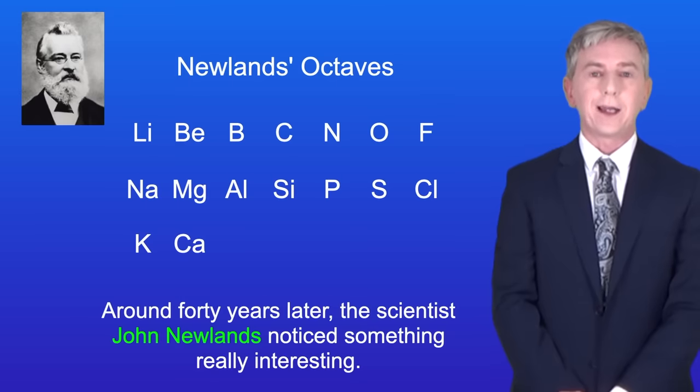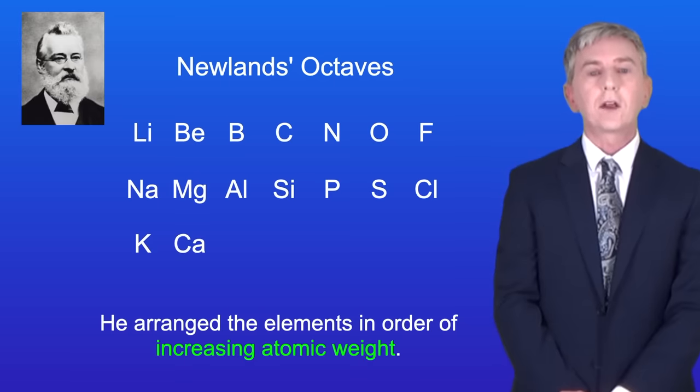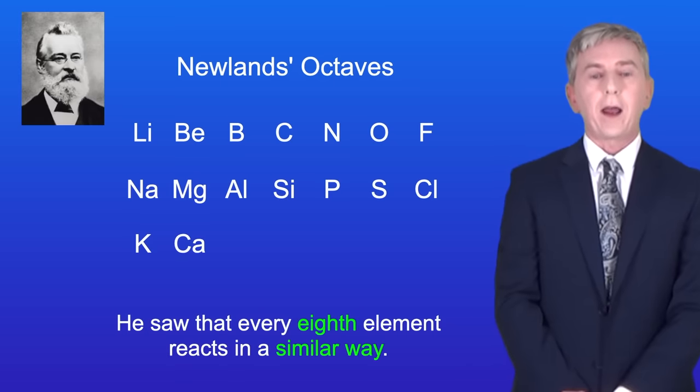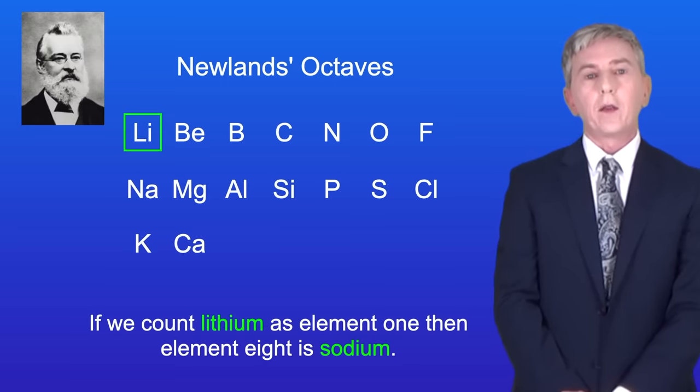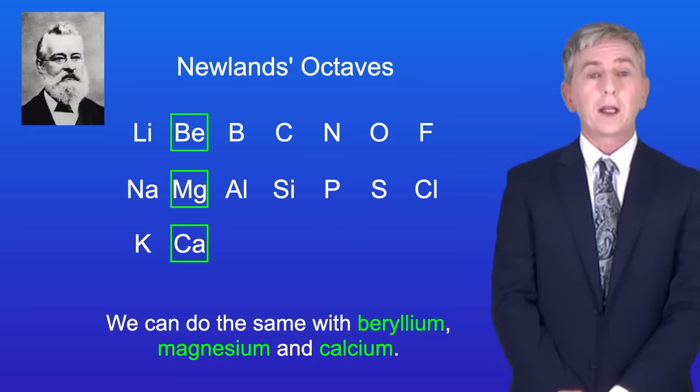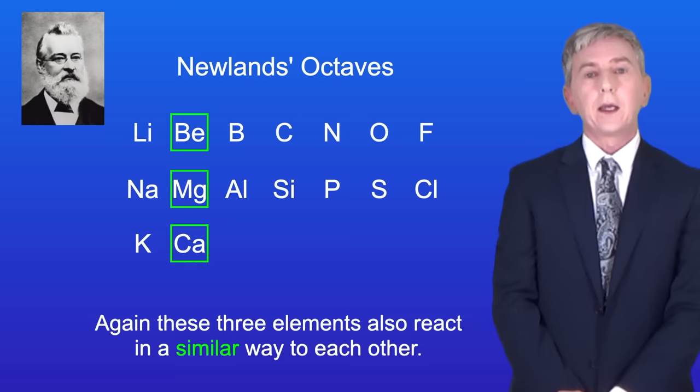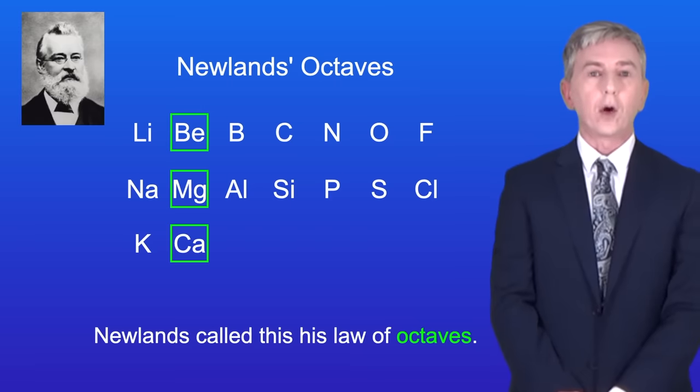Around 40 years later, the scientist John Newlands noticed something really interesting. He arranged the elements in order of increasing atomic weight. He saw that every eighth element reacts in a similar way. If we count lithium as element 1, then element 8 is sodium. If we now count sodium as element 1, then element 8 is potassium. We can do the same with beryllium, magnesium, and calcium. And again, these three elements also react in a similar way to each other. Newlands called this his law of octaves.